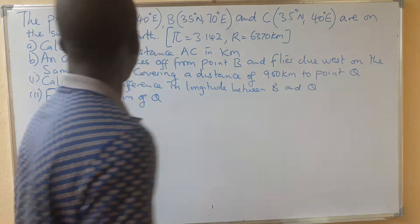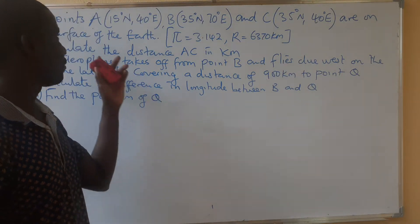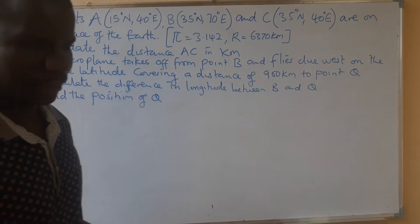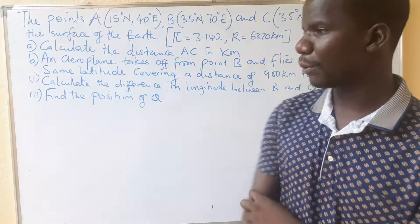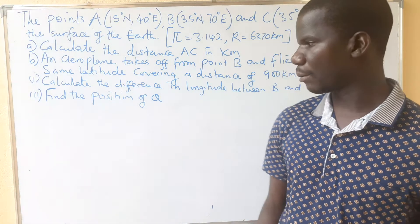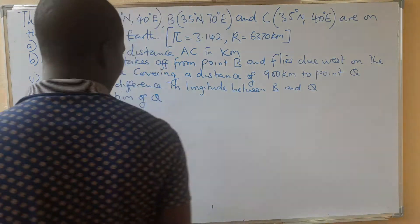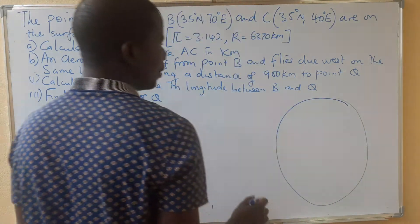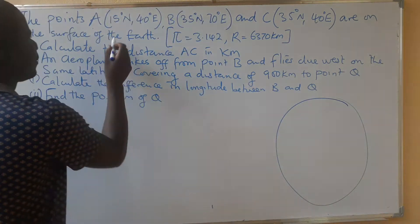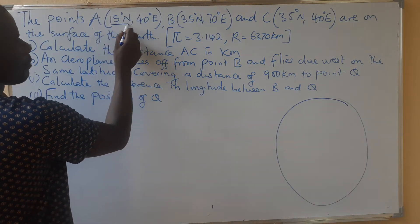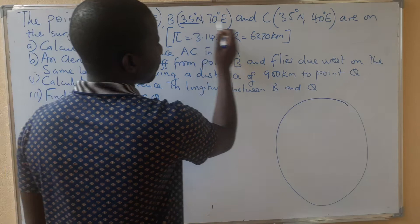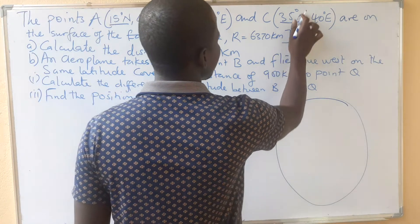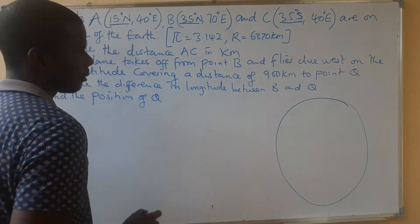Let's read through the question. We have been given three points on the surface of the earth, and there are questions you're supposed to answer. The easier way to handle this is to sketch the globe. You look at the latitudes — we have 15, 85, and 35. This one is supposed to be south.